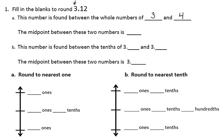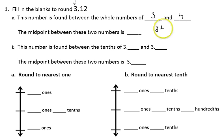Now the midpoint of 3 and 4, or the halfway point, would be 3 and 1 half. And as a decimal, that would be 3 and 5 tenths. So 3 and 5 tenths is the midpoint, the halfway point, between the numbers 3 and 4.